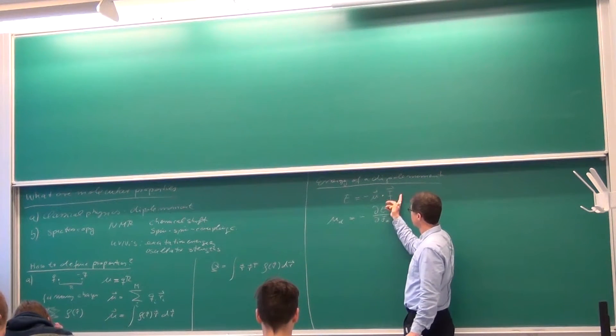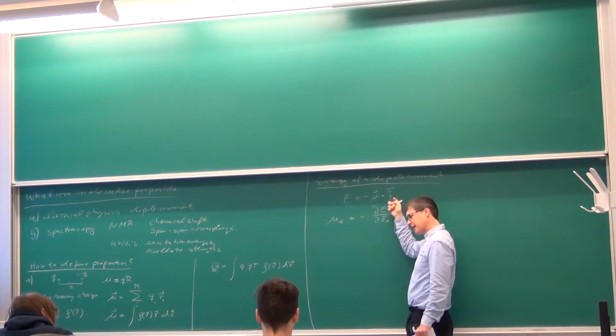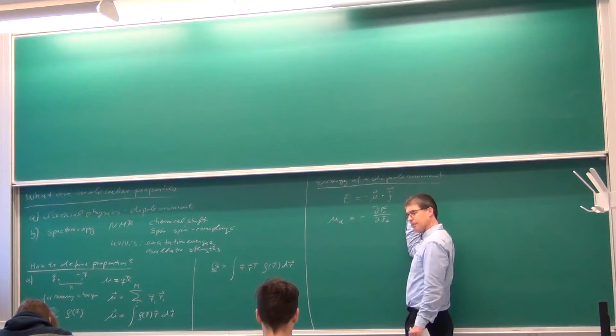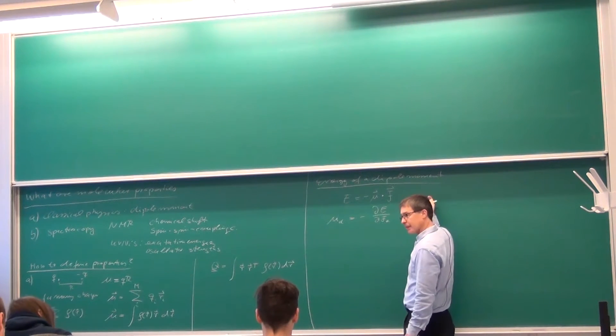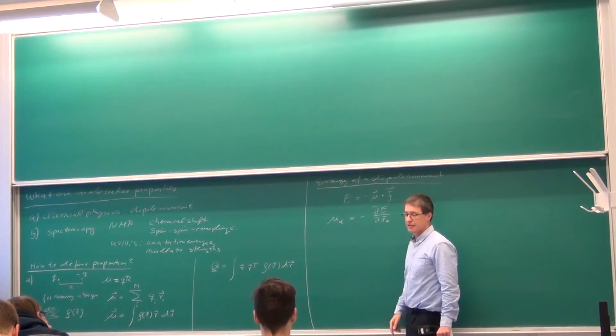If I take the derivative of that scalar product—that scalar product is μ_x times F_x plus μ_y times F_y plus μ_z times F_z. So if I want to get one of the components, I just take the derivative of the energy.